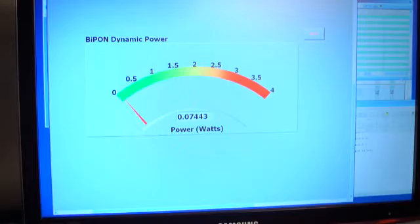Currently, we are measuring about 60 milliwatts, which is about 30 to 50 times less than the power consumption of XG PON, depending on the mode in which XG PON is operating.